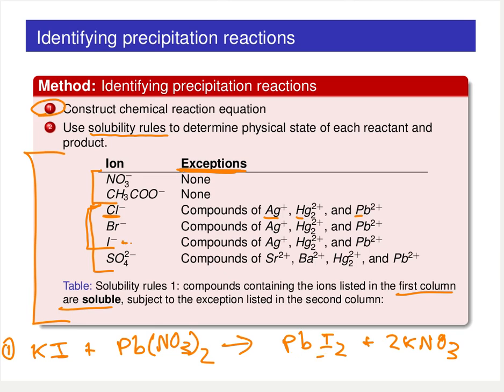Looking at the table, the iodide is paired up with lead, and therefore it will be a solid — an insoluble compound. Potassium nitrate has a nitrate ion, which is going to give us an aqueous solution, which is what we saw in the previous example. We're using our tabulated values here to verify that.